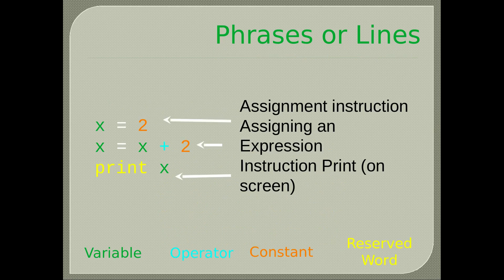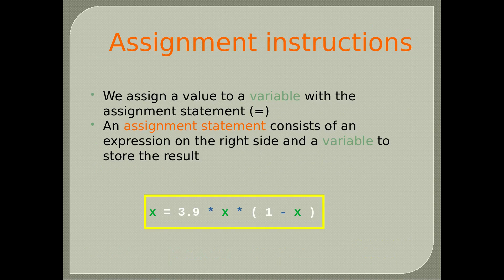Phrases or lines. Assignment instructions: x = 2 is an assignment instruction. Assigning an expression: x = y + 2. Instructions to print on screen: print x in Python 2; print(x) in Python 3. An assignment statement consists of an expression on the right side and a variable to store the result.